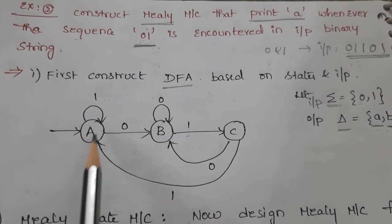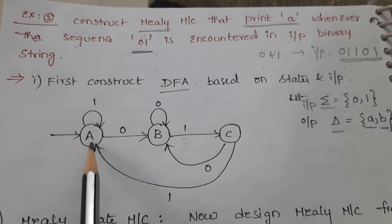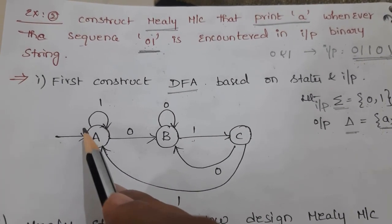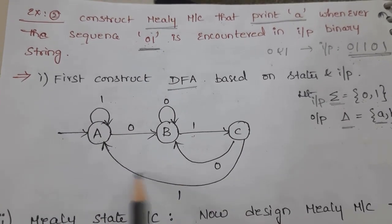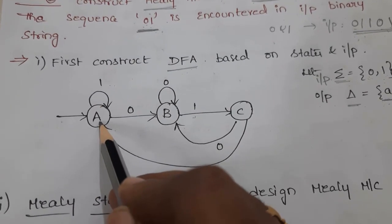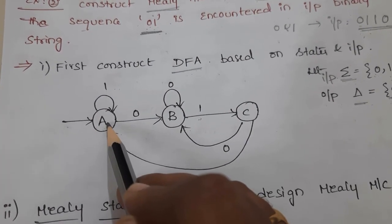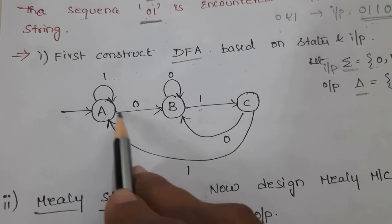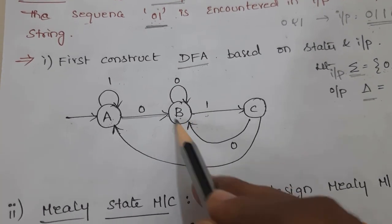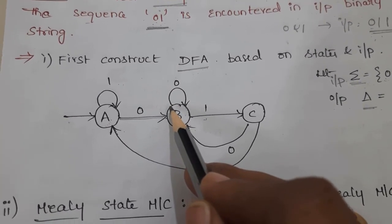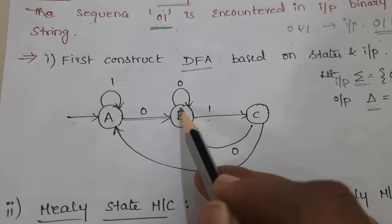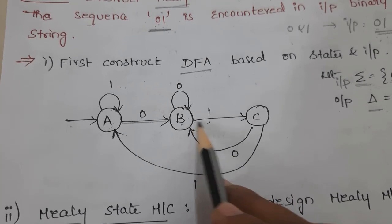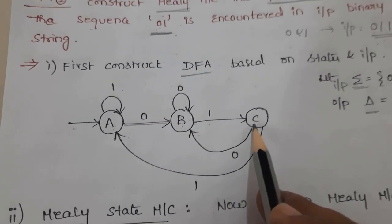Initially, the initial state of the machine is A. In this state diagram, I am representing only inputs, not outputs. When 1 is the input to state A, it stays in state A — a self-loop. When 0 is the input to state A, it goes to state B. Now at state B, the two possible inputs are 0 or 1.